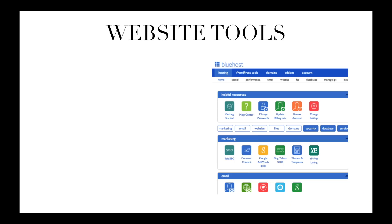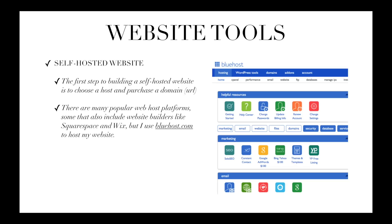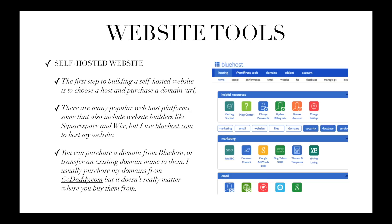Now let's talk about website tools — specifically tools for creating your own self-hosted website. The first step to building a self-hosted website is to choose a host and purchase a domain name or URL. There are many popular web host platforms, some that also include website builders like Squarespace and Wix, but I use Bluehost.com to host my website. You can purchase a domain from Bluehost, or you can transfer an existing domain name to them. I usually purchase my domains from GoDaddy.com, but wherever you have your URL currently, you can transfer it to Bluehost and purchase a web hosting package to start building your website.